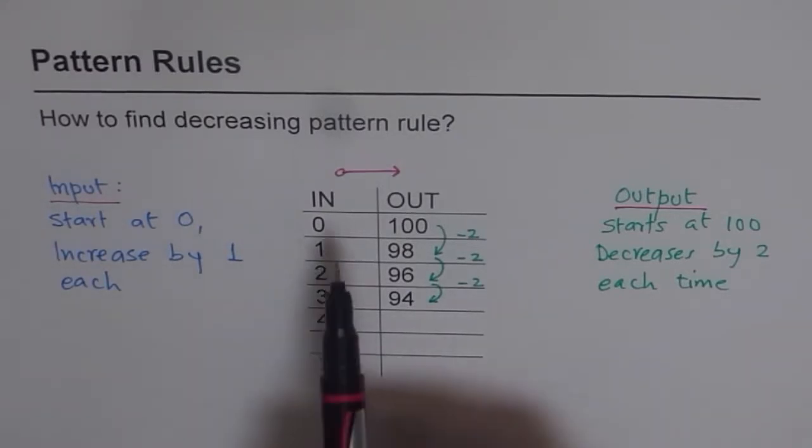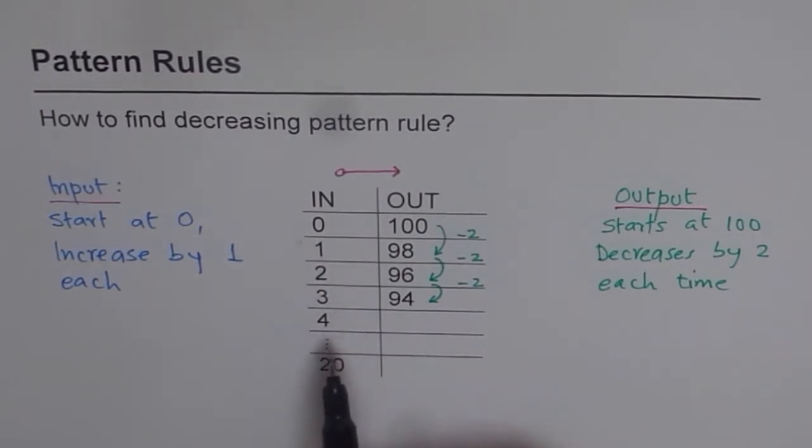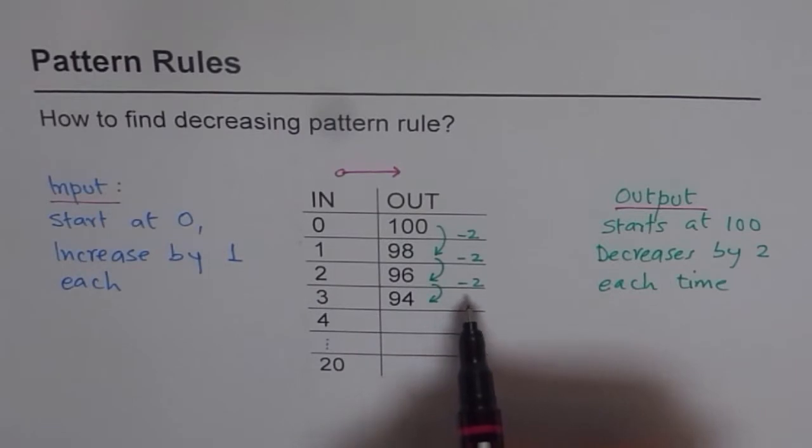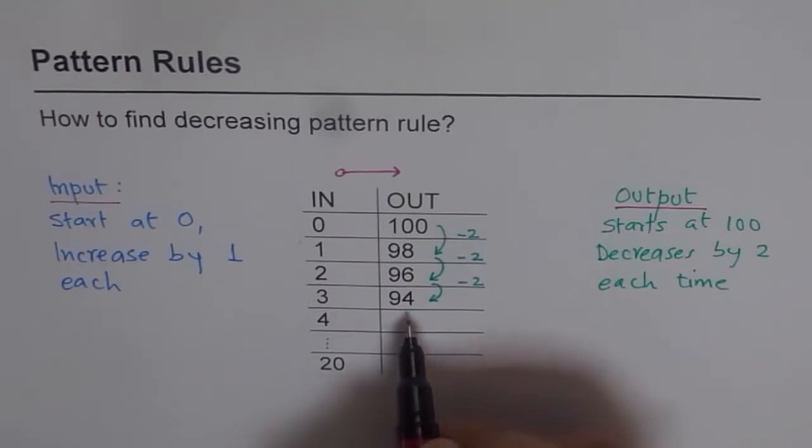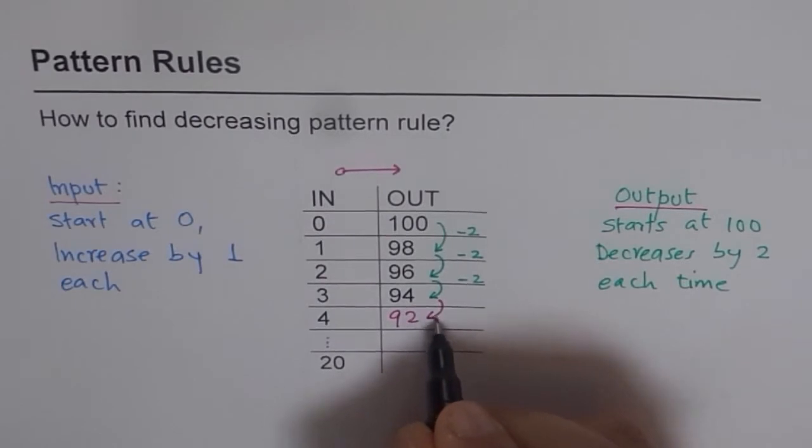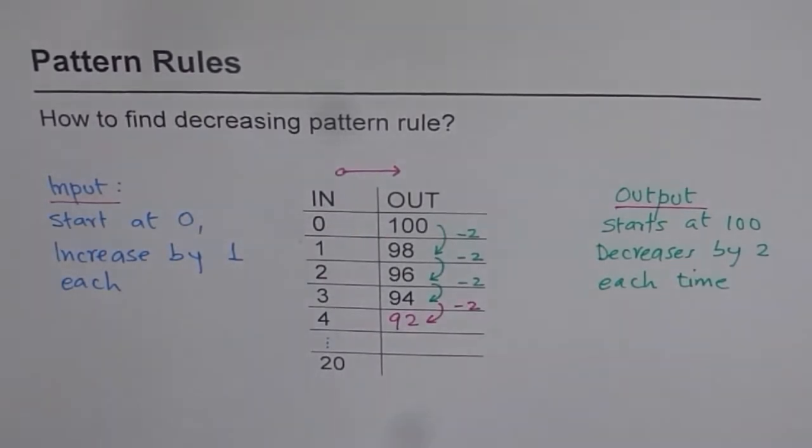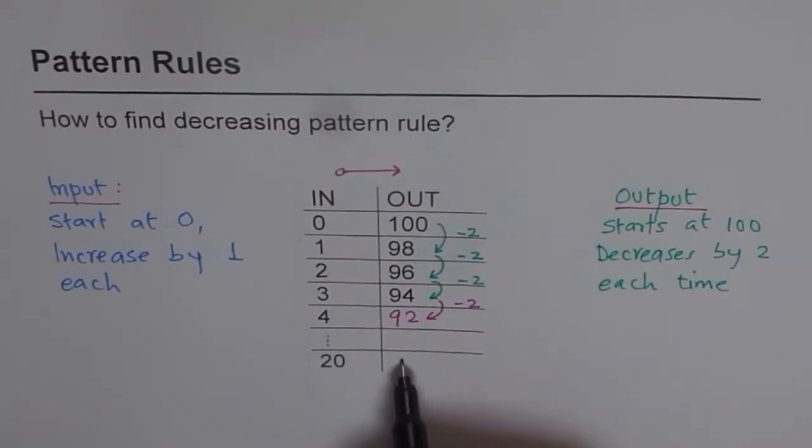If I input 0, I get output of 100. If I input 1, I get an output of 98. And if I input 4, what output should I get? Well, if you see the pattern, it is decreasing by 2 and therefore, for 4 as an input, I should get output of 2 less than 94. So that means 92, since I have to decrease minus 2. Well, that was easy.